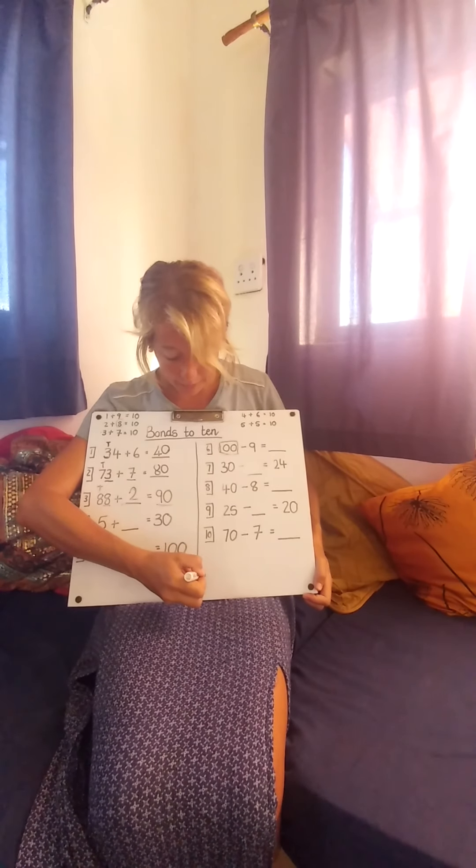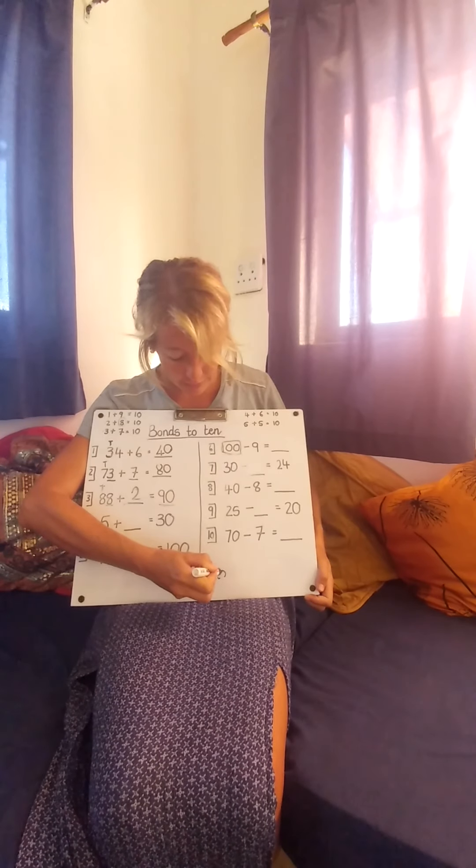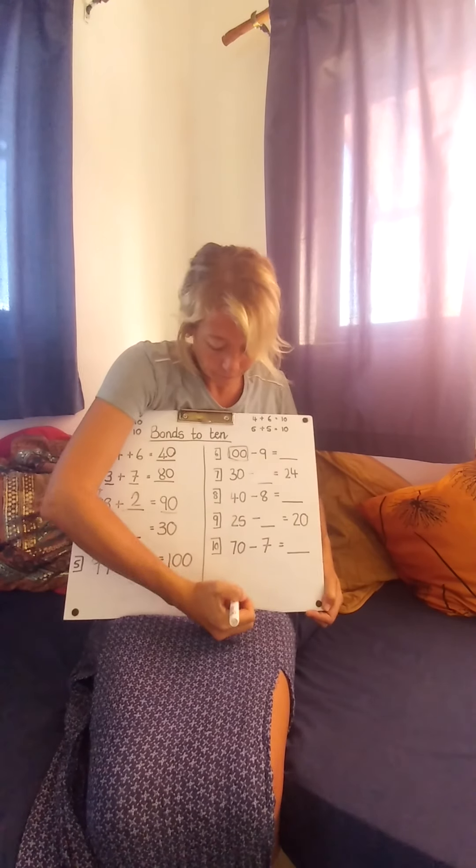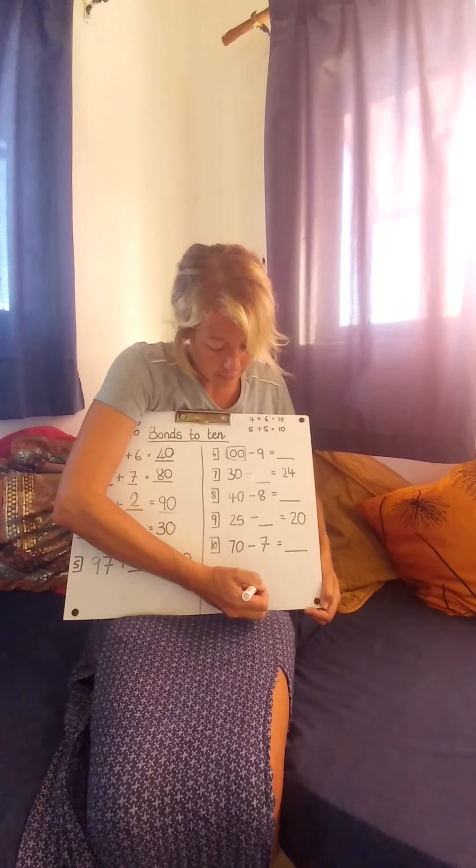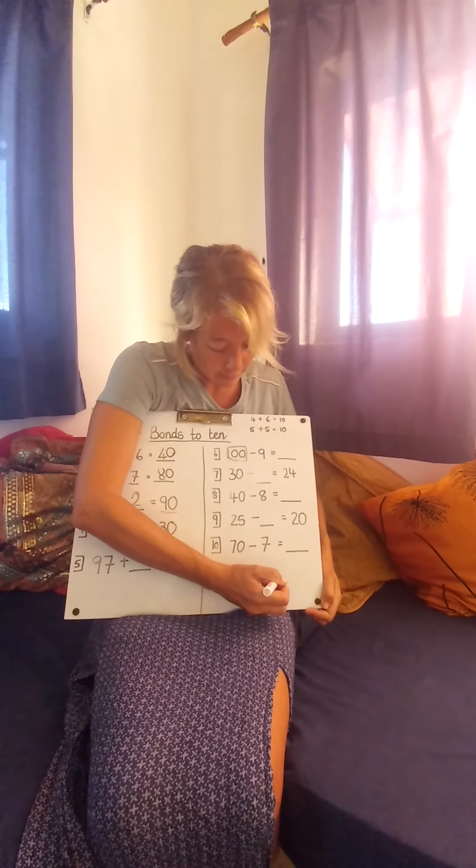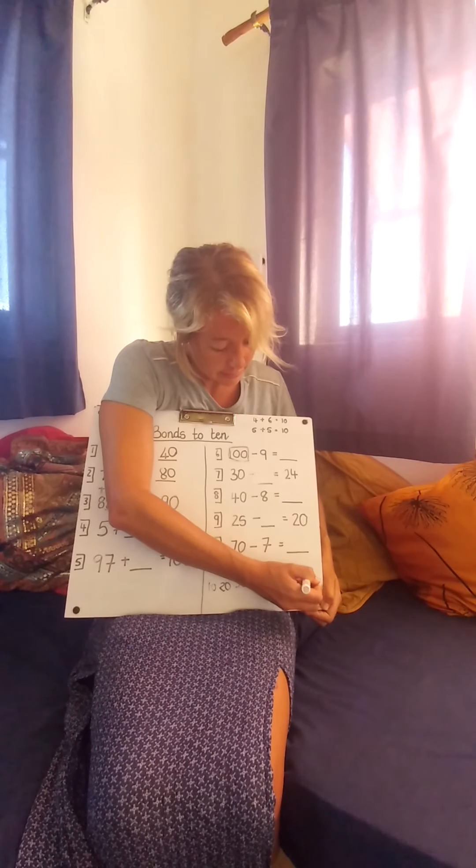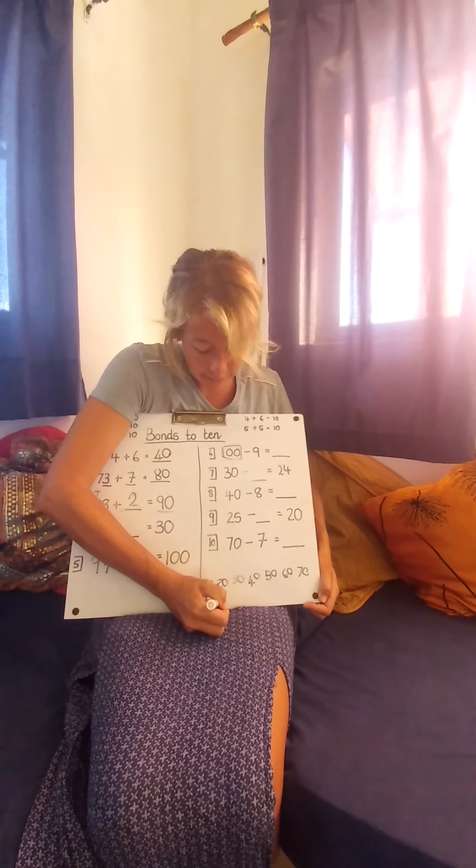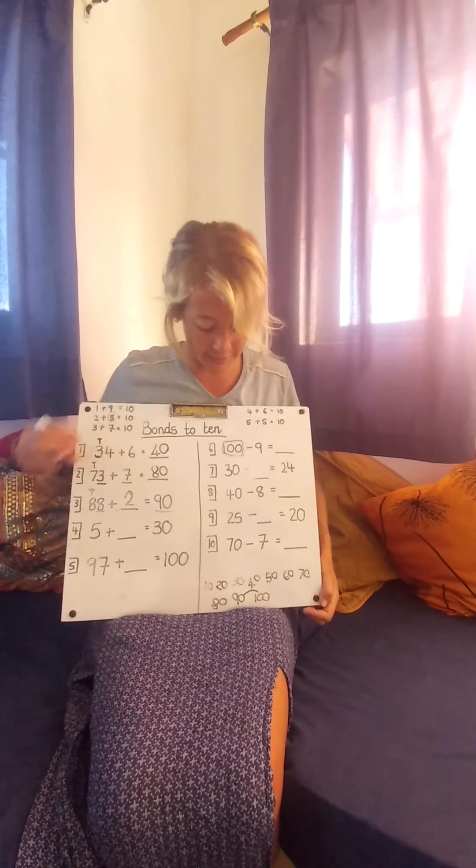Let's write it down here. 10, 20, 30, 40, 50, 60, 70, 80, 90, 100. So the 10 that comes before 100 is 90.